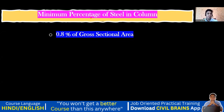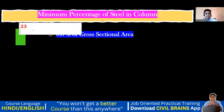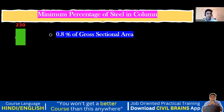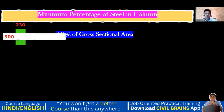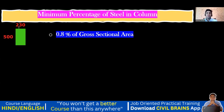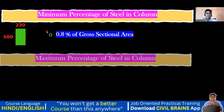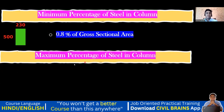Let's take a column example. This column is 230 mm on the breadth side and 500 mm on the other side. The gross sectional area is 230 multiplied by 500. That gives us the gross sectional area.